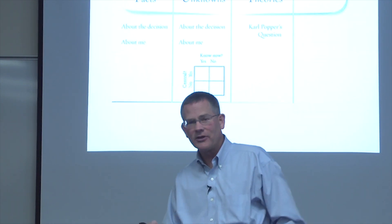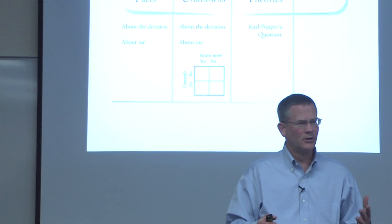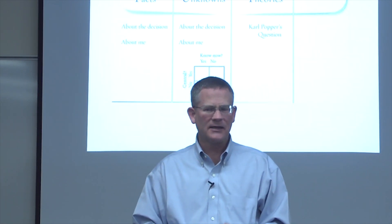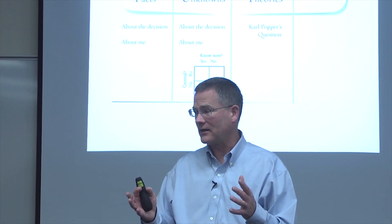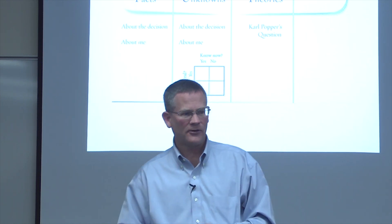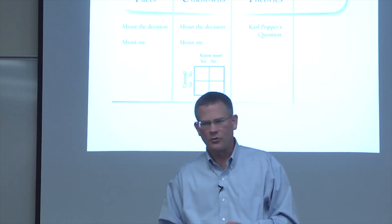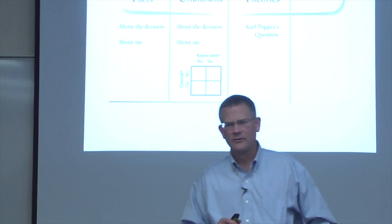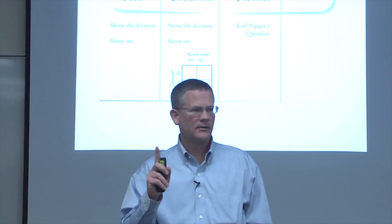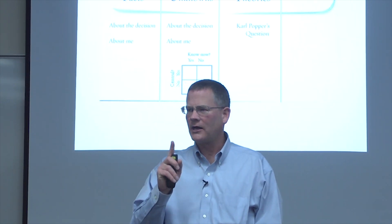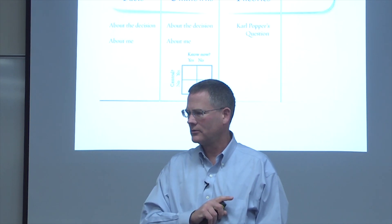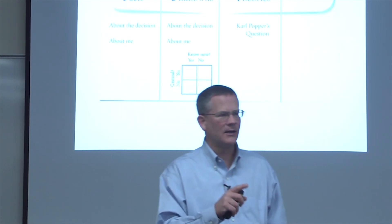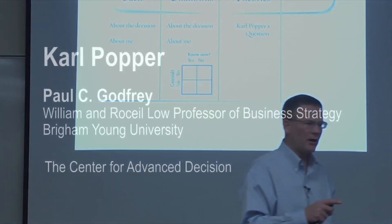How do we figure out what isn't true? We design an experiment and we find a piece of data — it's called the critical data — that allows us to test a hypothesis. So Karl Popper's question is this: what one piece of data would prove my hypothesis wrong?